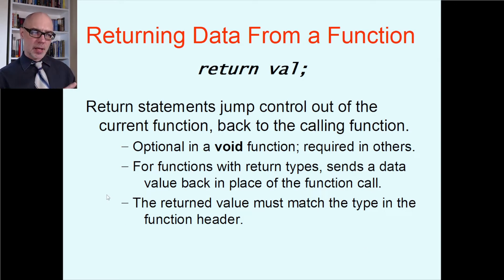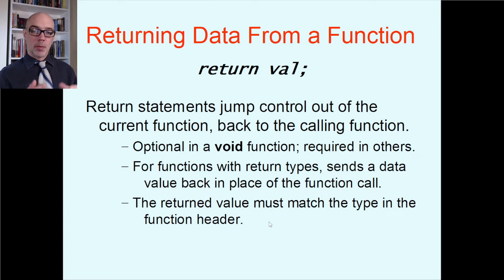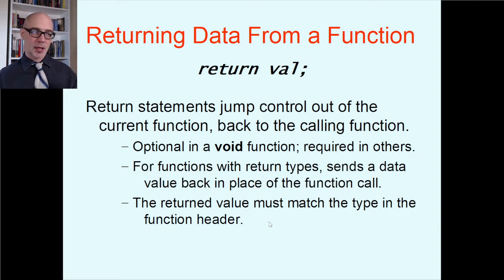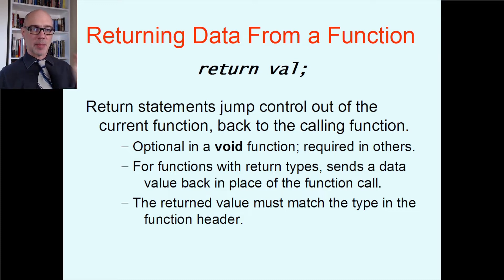When that data gets sent back in your return statement, the function call statement takes on that value. You can do whatever you want with it — print it, assign it to a variable, use it in math. The returned value must match the type in the function header. The return type is the very first thing in the function header, like int main. That int is the return type — you're committing to returning an integer. They've got to match up or there will be a compiler error.